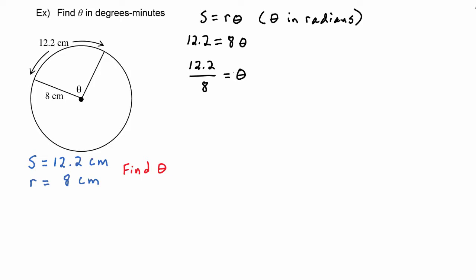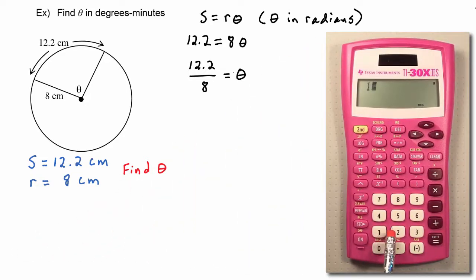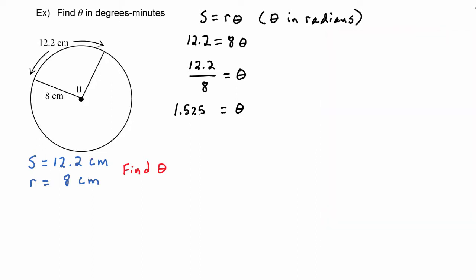Stepping over to our calculators, 12.2 divided by 8 gives us 1.525, so theta equals 1.525 radians. The problem asked us to find theta in degrees and minutes, so we're going to need to convert into degrees and then into degrees and minutes.